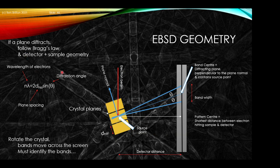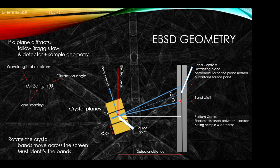This geometry — we've seen this figure before — shows the electron beam introduced into the sample, scattering from a diffracting plane subject to Bragg's law. We can have the center of the diffraction band and inscribe the band edges by the two-theta relationship, which is related to the plane spacing and the electron energy. As we rotate the crystal, the bands will move across the screen.